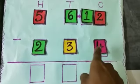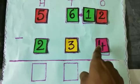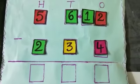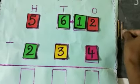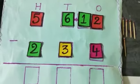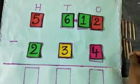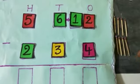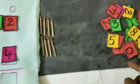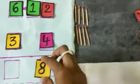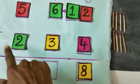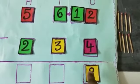Now, 12 ones minus 4 ones will be subtracted. 4 is given below. So we count 4 after 12: 5, 6, 7, 8, 9, 10, 11, 12. How many math sticks are there? Count: 1, 2, 3, 4, 5, 6, 7, 8. Take the number 8 and write in the ones place. 12 ones minus 4 ones equals 8 ones.